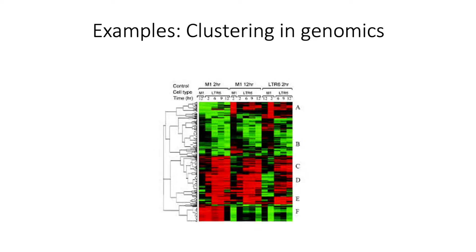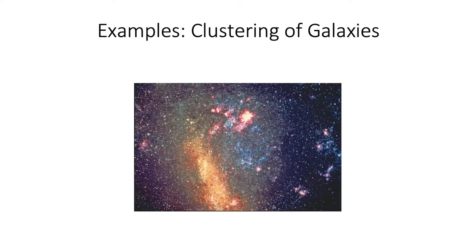Clustering is also used in genomics. If you have genomic data and you want to group genes that are performing similar functions, you can run a clustering algorithm over the vector that represents the genes.